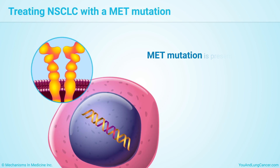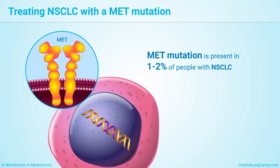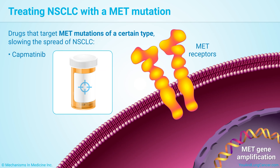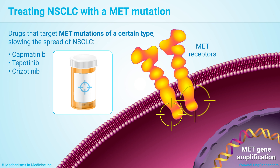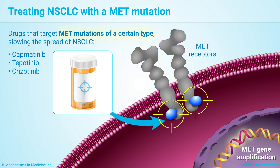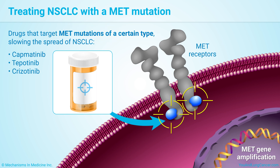1 to 2% of people with non-small cell lung cancer have mutations in a gene called MET. Capmatinib, topotinib, and cruzotinib can slow the spread of non-small cell lung cancer with this mutation if the MET mutations are a certain type. These are taken as pills.